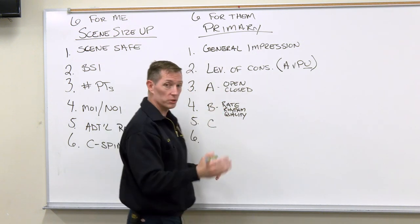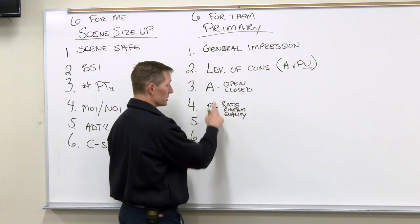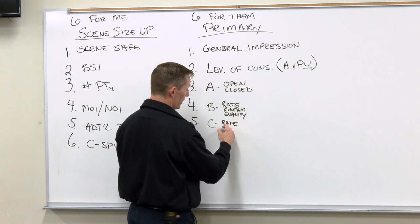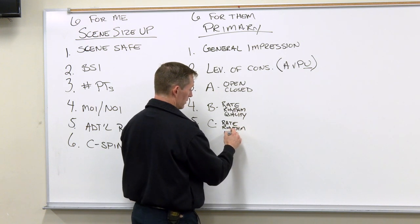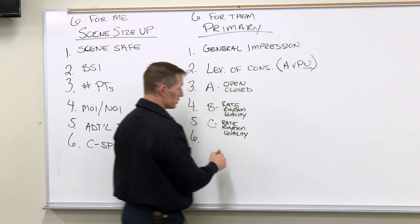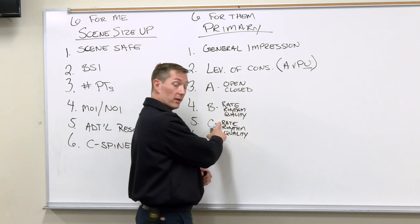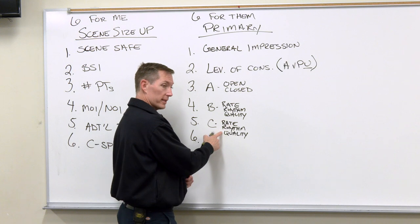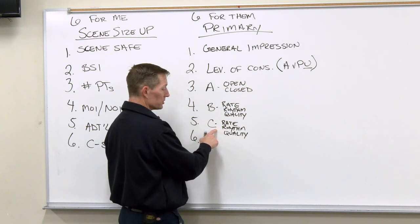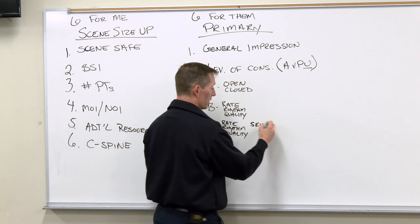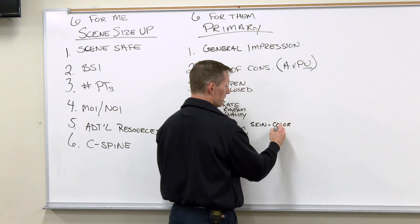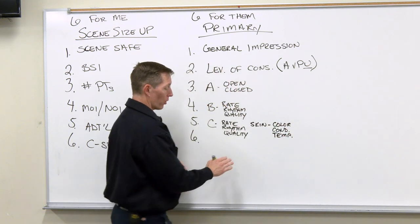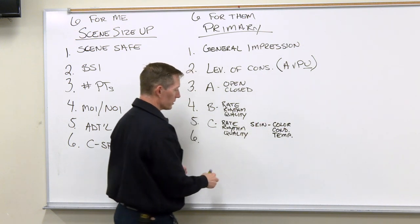I don't even check pulse ox yet. When I move on to C for circulation, I also want to know rate, rhythm, and quality of my pulse. I find my patient's pulse, determine whether it feels way too fast or way too slow, whether it's regular or irregular, and whether it's strong or weak. Additionally, under C for circulation, I also evaluate skin — I want to know color, condition, and temperature: warm, pink, and dry, or cool, pale, and diaphoretic.